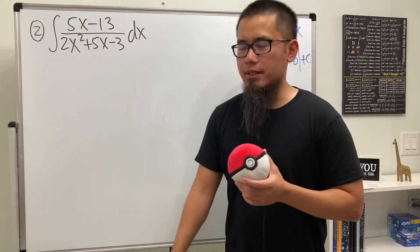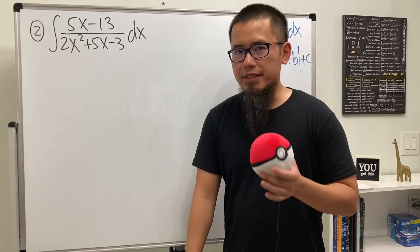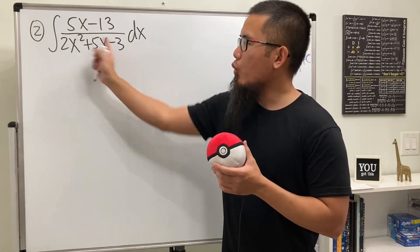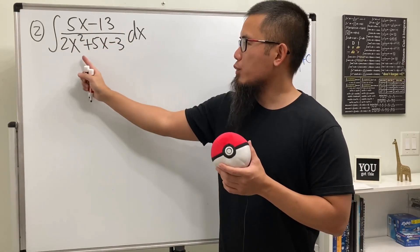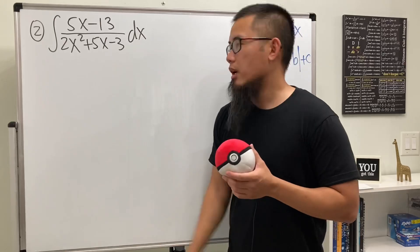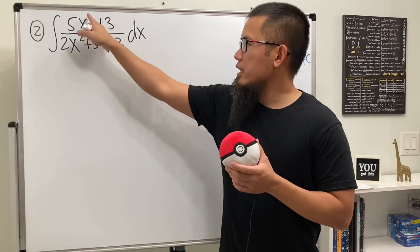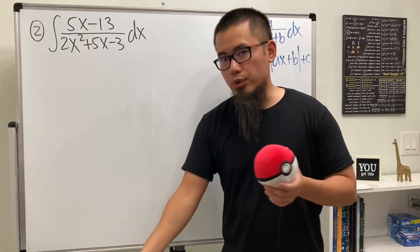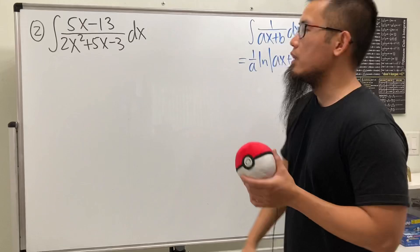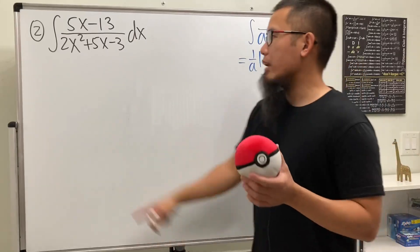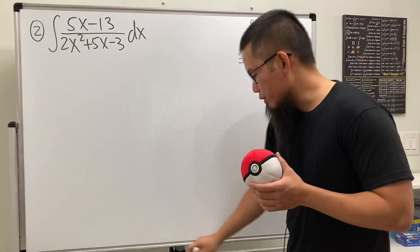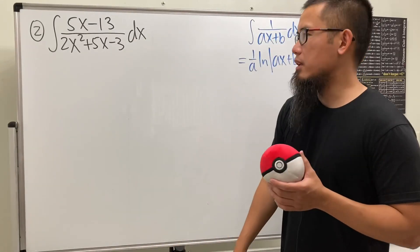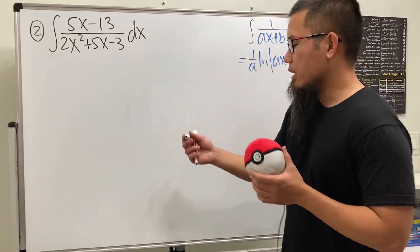For the second problem, we have the integral of (5x minus 13) over (2x² plus 5x minus 3). The degree on the top is 1, the degree on the bottom is 2, so we don't need to do long division. But we do have to factor the denominator.